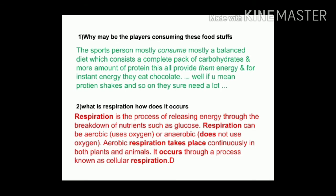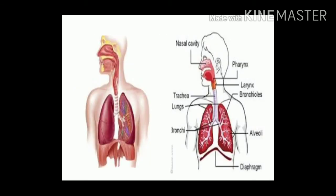Inhalation and exhalation together is called breathing. When inhalation is done, air enters the lungs. The oxygen from this air enters the blood while carbon dioxide from the blood exits. Through exhalation, CO2 is given out. This gas exchange occurs through the alveolar membrane and is called external respiration.